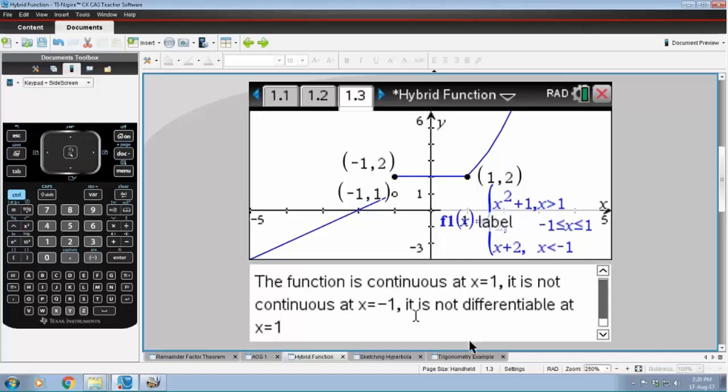Differentiability though is another point here. The graph cannot be differentiated at the point where x equals one because we have not got a smooth join there. And the graph certainly cannot be differentiated at the point where x is minus one as it is not continuous there.